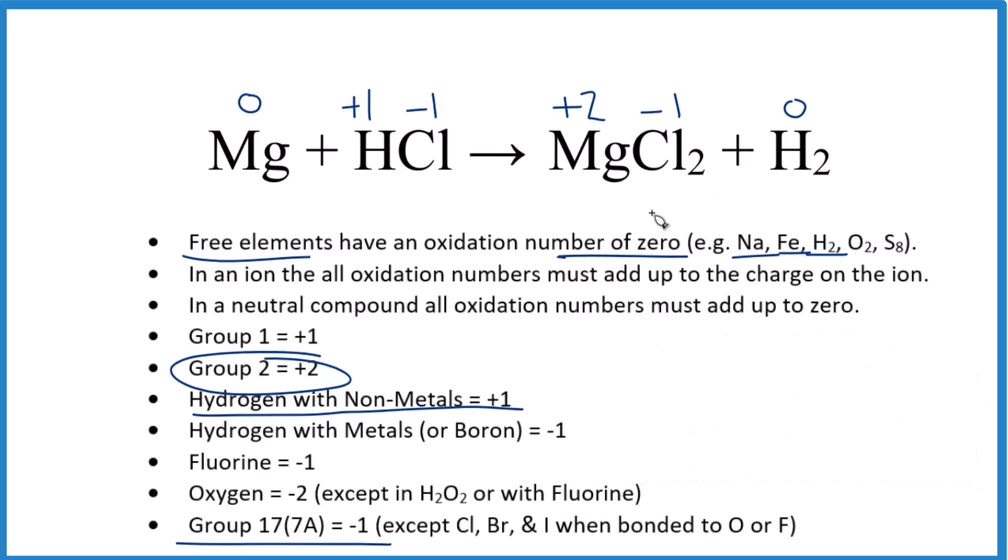If we look at the equation here, magnesium went from zero to plus two. That number changed. Hydrogen went from plus one to zero. That changed. That actually got smaller. Plus one to zero is smaller. That was reduced.